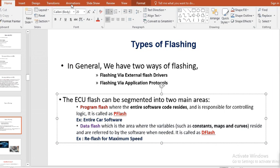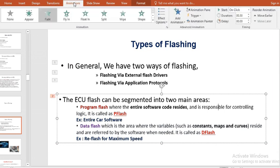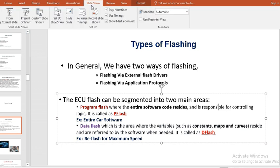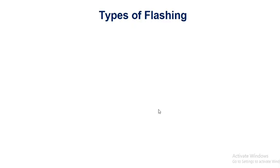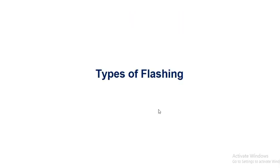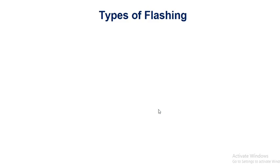In this video, I'm going to give an explanation on types of flashing — what are the types of flashing we have when we are testing. Flashing is a process where you are embedding the software into a chip, that is a microcontroller or microprocessor. That process is called flashing.